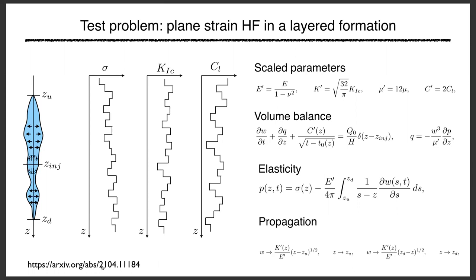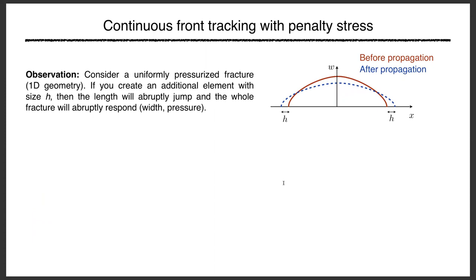We just posted a paper on arXiv with all the details of this problem and algorithm — it's fully open. Now, continuous front tracking: consider a uniformly pressurized fracture. If you propagate it by a single element in one step, creating additional elements of size h on both sides, under toughness domination you get a sudden jump in fracture length and drop in width because volume is conserved. That's a very large, discrete change in fracture behavior.